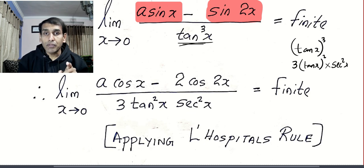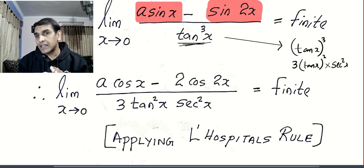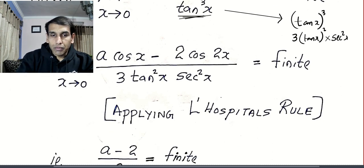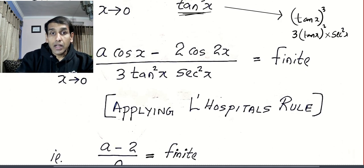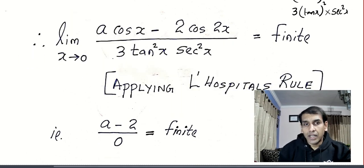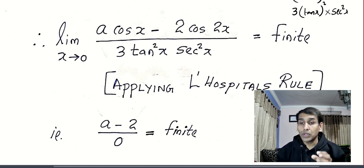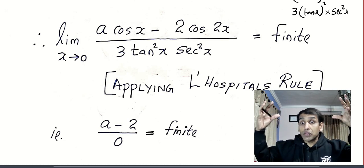How do you differentiate tan³x? We write tan³x as (tan x) whole cube — it looks like something cubed. So we differentiate: 3·(tan x)² times sec²x. Now applying the limit: a·1 minus 2·1, divided by 0, must equal a finite value. But if something is divided by 0, the quantity becomes very, very large.